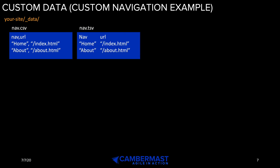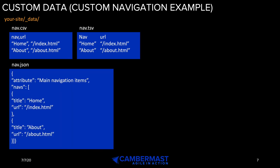Similar to a CSV file, you have a TSV file — a tab-separated values file. You can see we have nav with a tab and then url as the column titles. The first nav is home, and the url is /index.html because there's a tab after the word home. This isn't a space — this is actually a tab that you press on your keyboard. The layout works the same way as CSV.